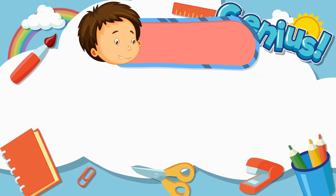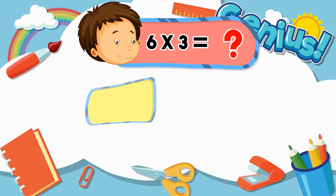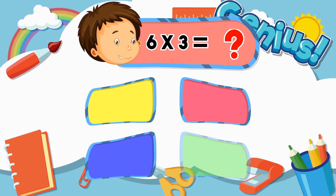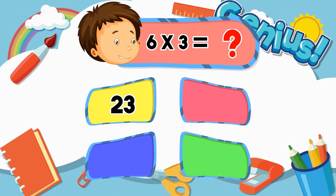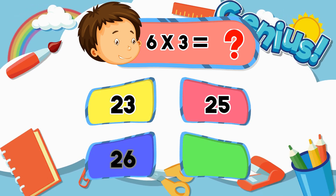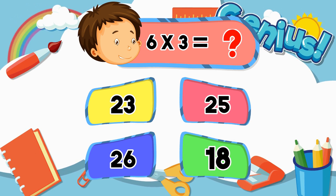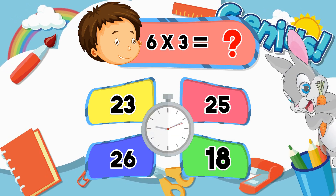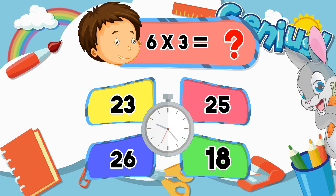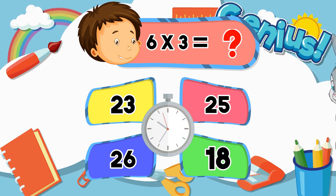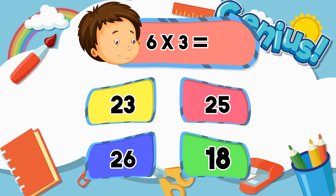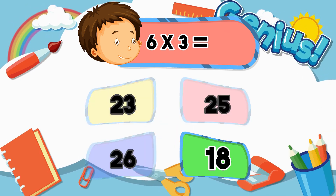What is 6 times 3? 23, 25, 18. Answer: 18.